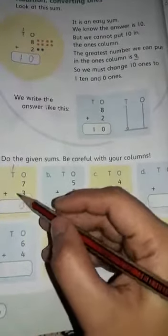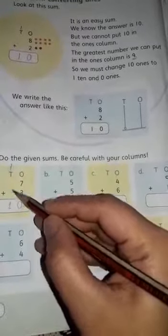We will write 0 in ones column and 1 in tens column. We will write 2 digit numbers. We will solve this way.